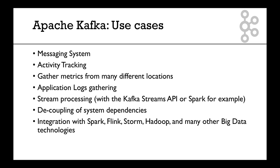A few use cases for Apache Kafka: you could use it as a messaging system, as an activity tracking tool, to gather metrics from many different locations, or to gather application logs. You can also do stream processing using the Kafka Streams API or Spark, for example. As we saw before, it allows you to decouple your systems.